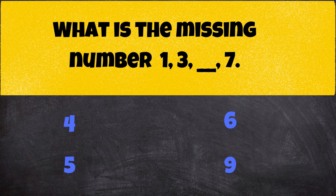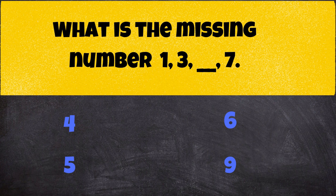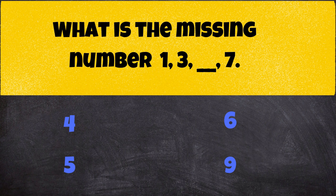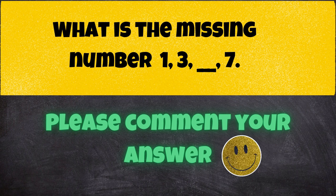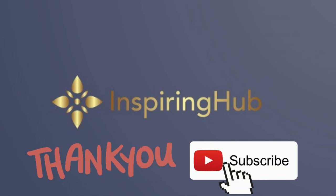What is the missing number in this sequence? 1, 3, dash, 7. Please comment your answer. Thank you for watching.